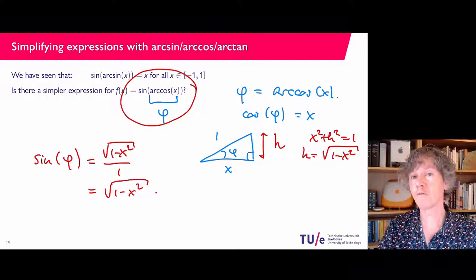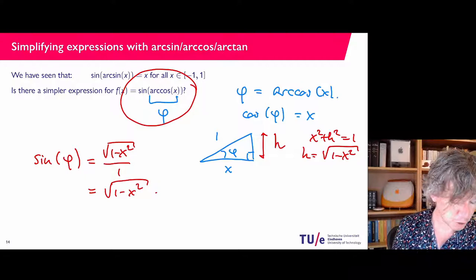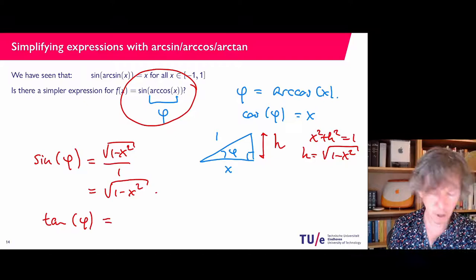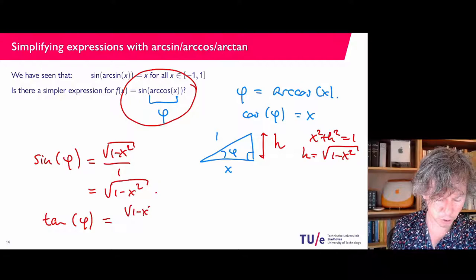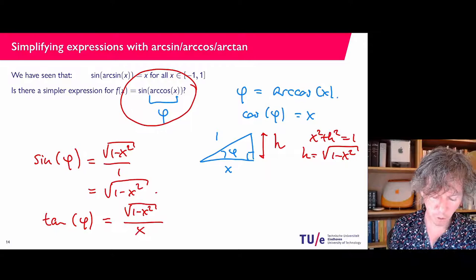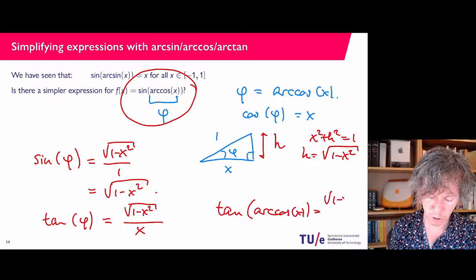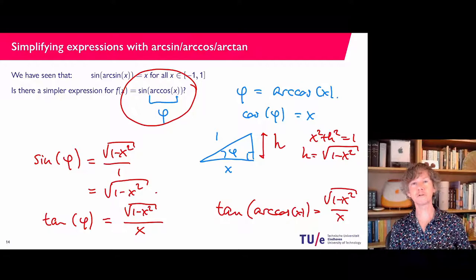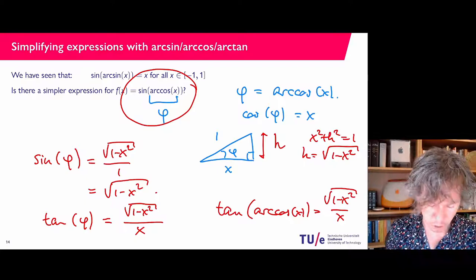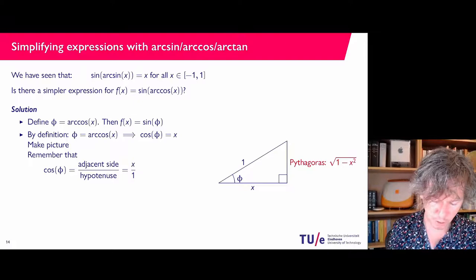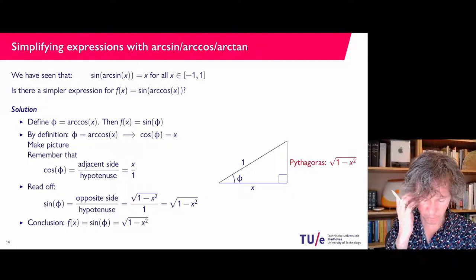So the sine of arc cosine of x equals the square root of 1 minus x squared. As a bonus, from the same triangle we can also find the tangent of phi: tangent is opposite over adjacent, which is h over x, so the tangent of arc cosine of x equals the square root of 1 minus x squared over x. This shows how you can work with these inverse functions and simplify expressions involving them. These steps are also typed on the slide, so you can read that later on.